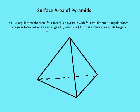In the next question, number 11, the book gives us a regular tetrahedron. A tetrahedron is a four-faced pyramid that has four equilateral triangular faces. They tell us the edge length of the tetrahedron is six, and they ask us to find its total surface area and its height. Each of the edges is six, so we have four different faces.